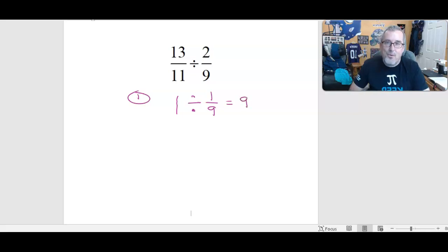Well, 9. 1/9, 2/9, 3/9, 4/9, 5/9, 6/9, 7/9, 9/9. It takes 9 1/9ths to make 1. That's what a 1/9th is. A 1/9th is what you get when you take a whole and cut it up into 9 equal parts. So it takes 9 1/9ths to make 1. That's my first line of thinking.